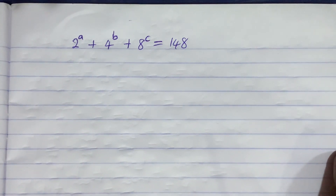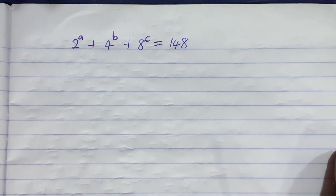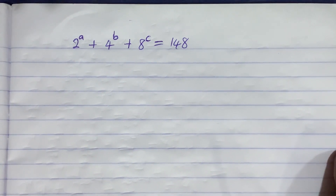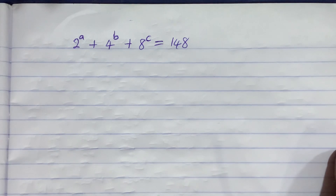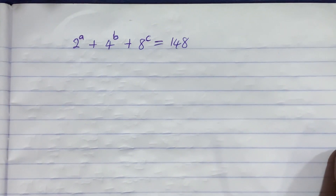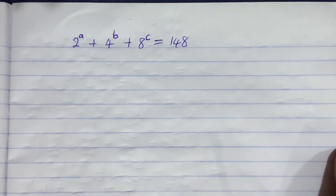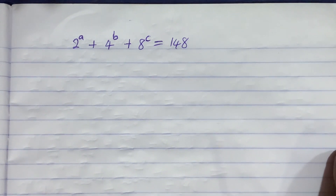Let us quickly solve this Olympiad math problem. We are given that 2 raised to the power A plus 4 raised to the power B plus 8 raised to the power C is equal to 148. We need to find A, B, and C.